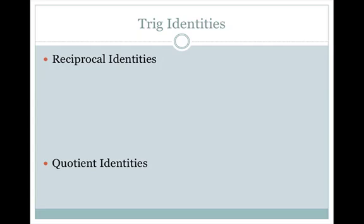With reciprocal identities, we've been talking about how some of the trig functions are reciprocals of each other. Instead of referring to them in terms of opposite over hypotenuse or adjacent over hypotenuse, we're going to refer to them in relation to each other. For example, we know that sine and cosecant are reciprocals of each other, so we can say that sine equals 1 over cosecant theta.